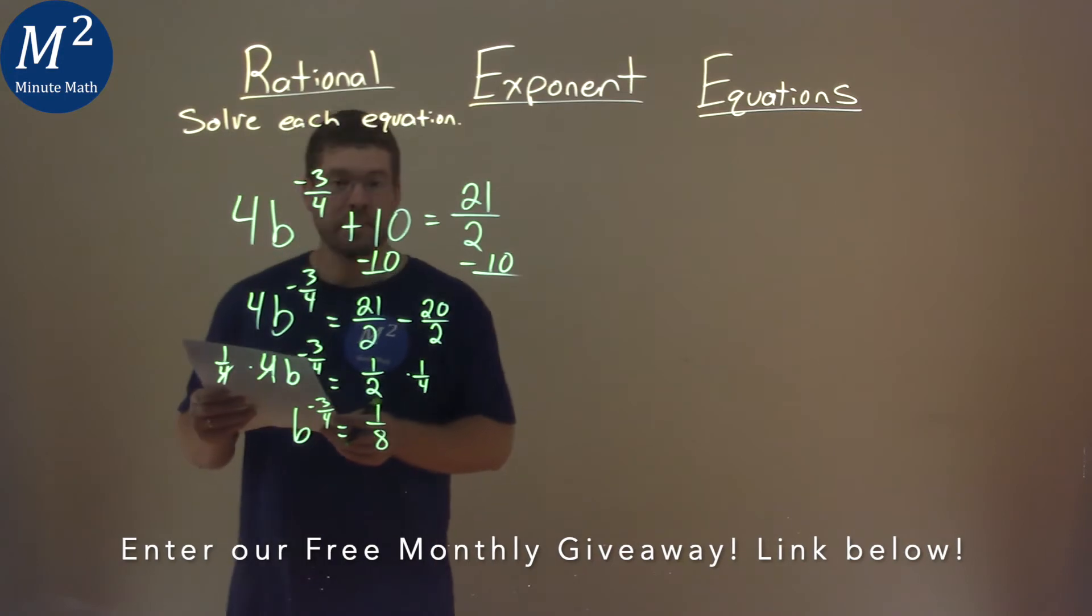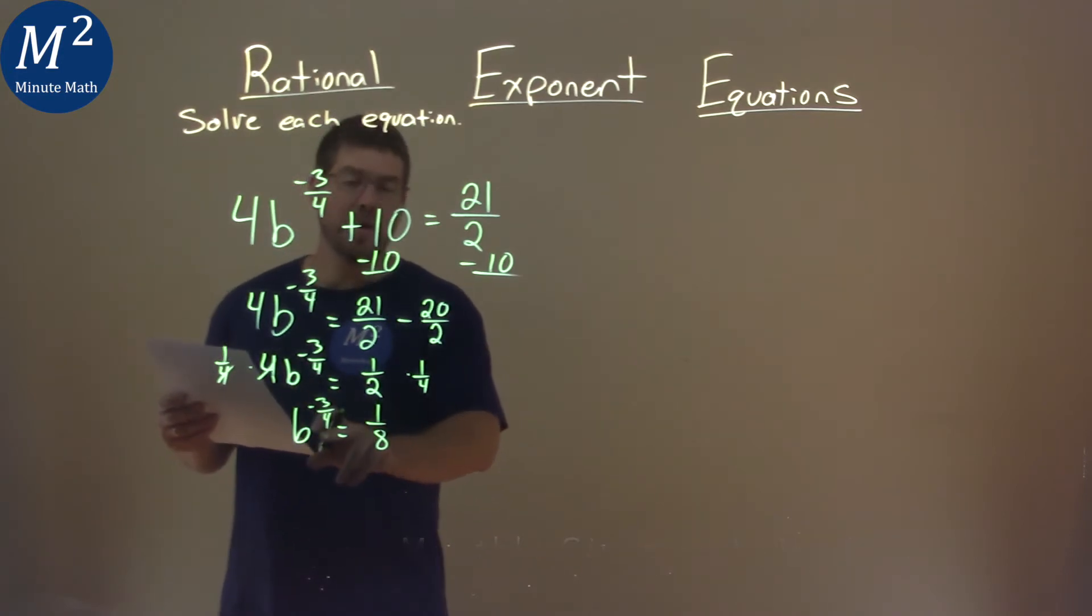So where do we go from here? Here we have b to the negative 3 fourths power. I'm going to raise that to a negative 4 thirds power, and we're going to do that to both sides.